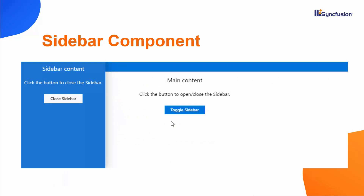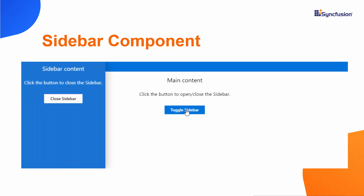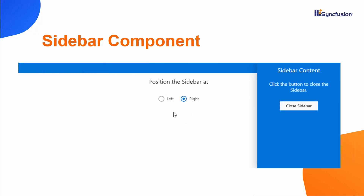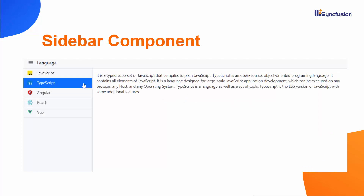In this video, I will show you how to add the Syncfusion Blazor sidebar to an app, how to close and open the sidebar manually, and how to change the sidebar position. Finally, I will show how to integrate the ListView component into the Blazor sidebar. To explore other features available in Syncfusion Blazor sidebar, refer to the link in the card above.